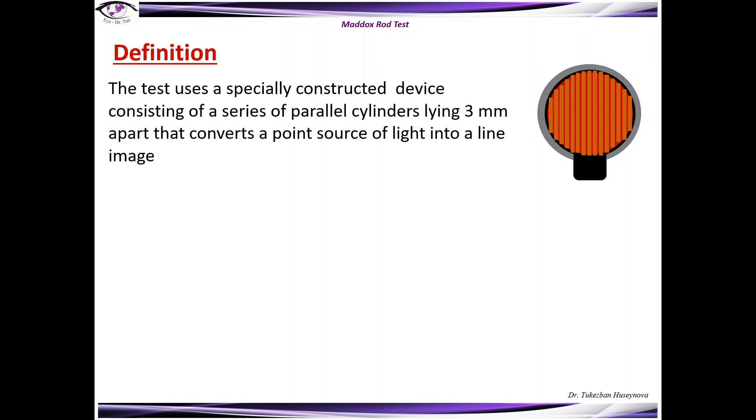Definition. This test uses a specially constructed device consisting of a series of parallel cylinders lying 3 mm apart that converts a point source of light into a line image.